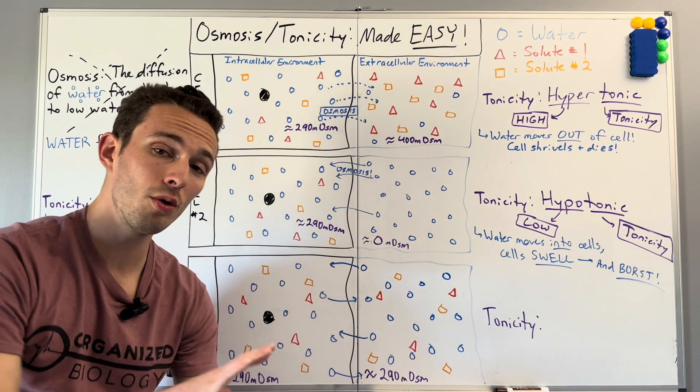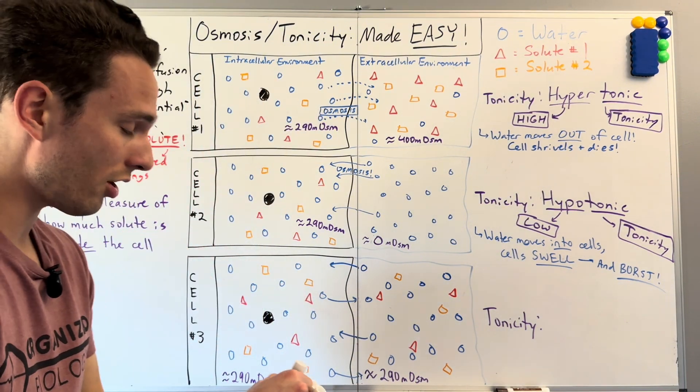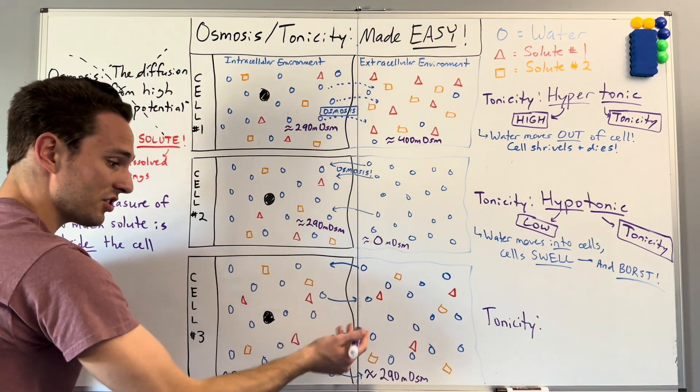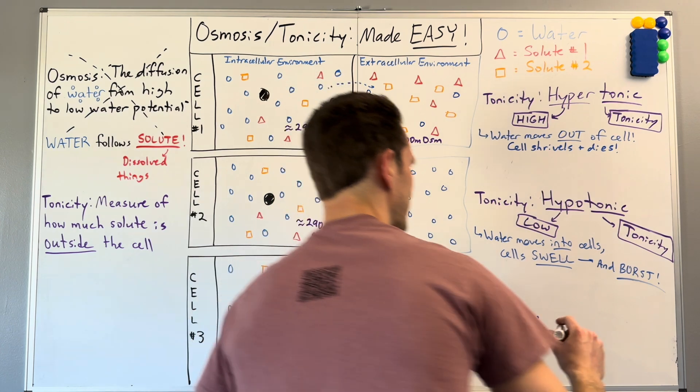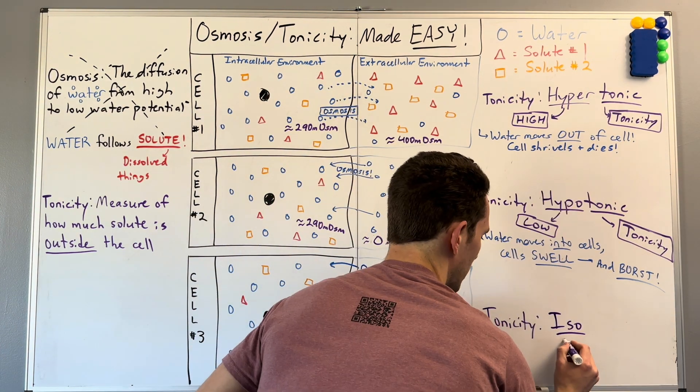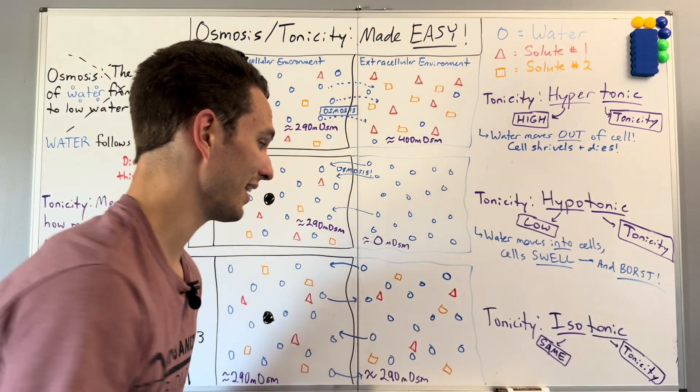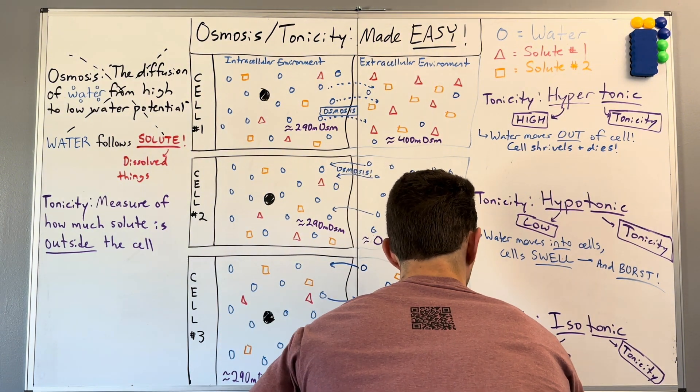So there will be no total net movement of water in or out. We call this the same tonicity on both sides. So we call it iso, meaning same, tonic. And again, in this case, there's no net water movement.